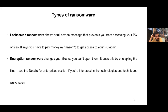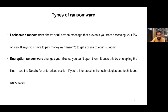There are two types of ransomware: lock screen ransomware and encryption ransomware. Lock screen ransomware shows a full-screen message that prevents you from accessing any files. Encryption ransomware changes file extensions so you cannot open your files without paying — through Bitcoin or some other method — to obtain the ransomware password.